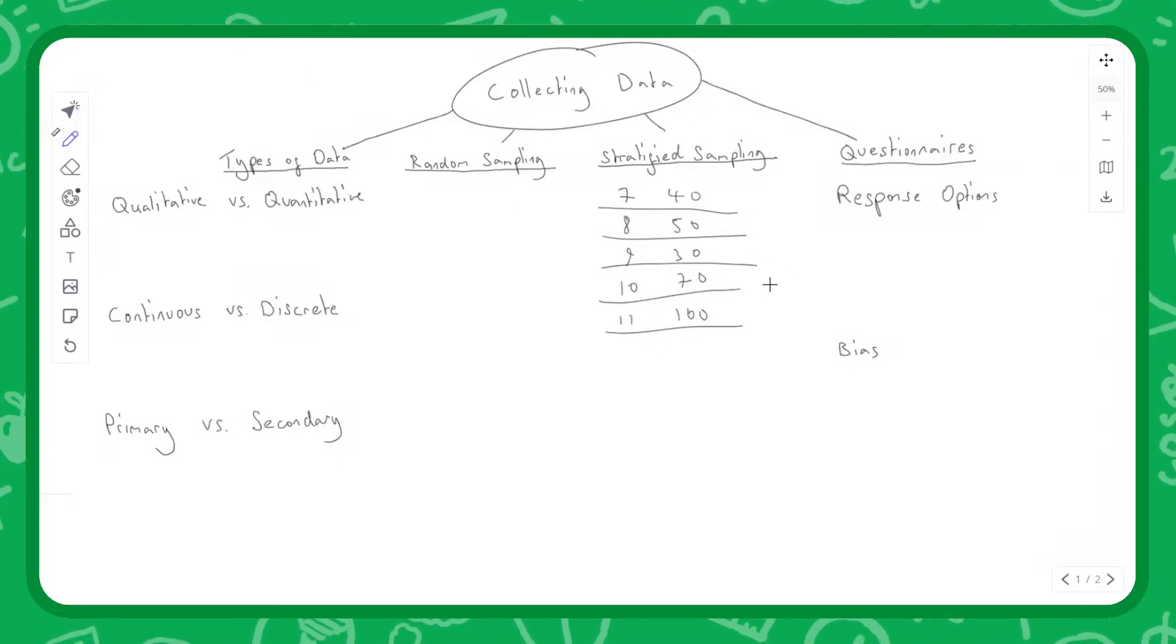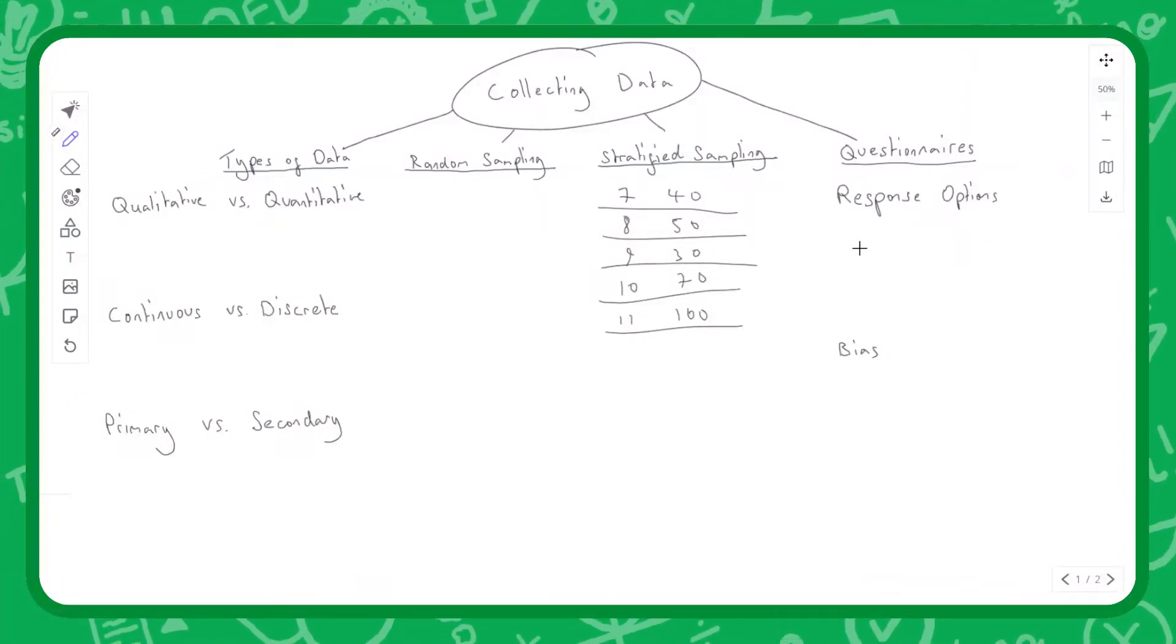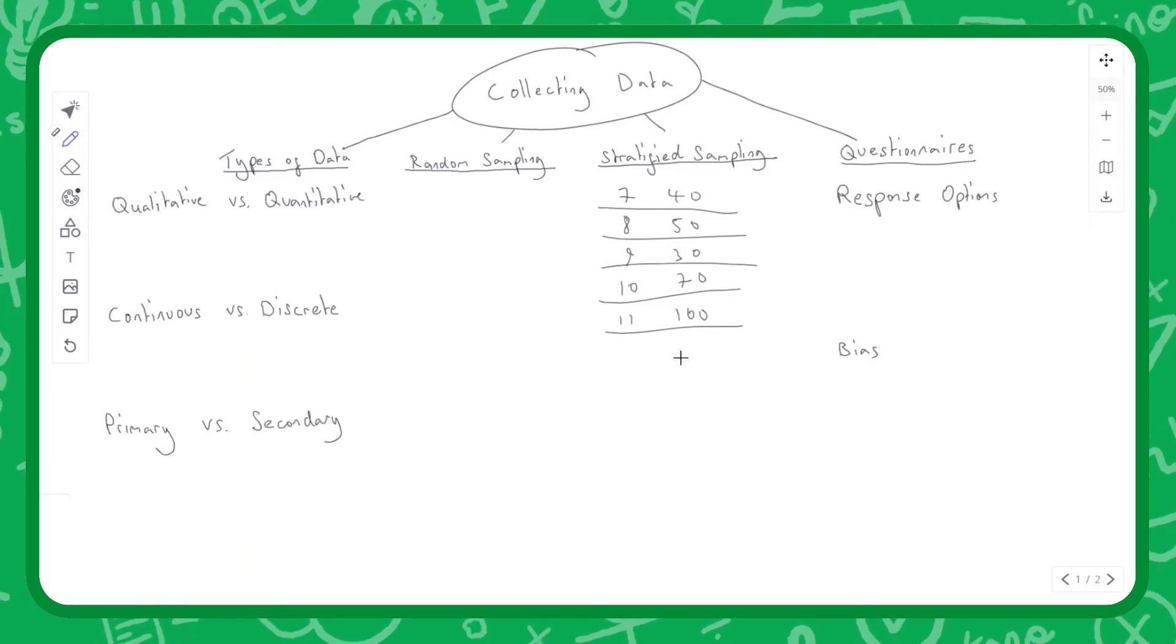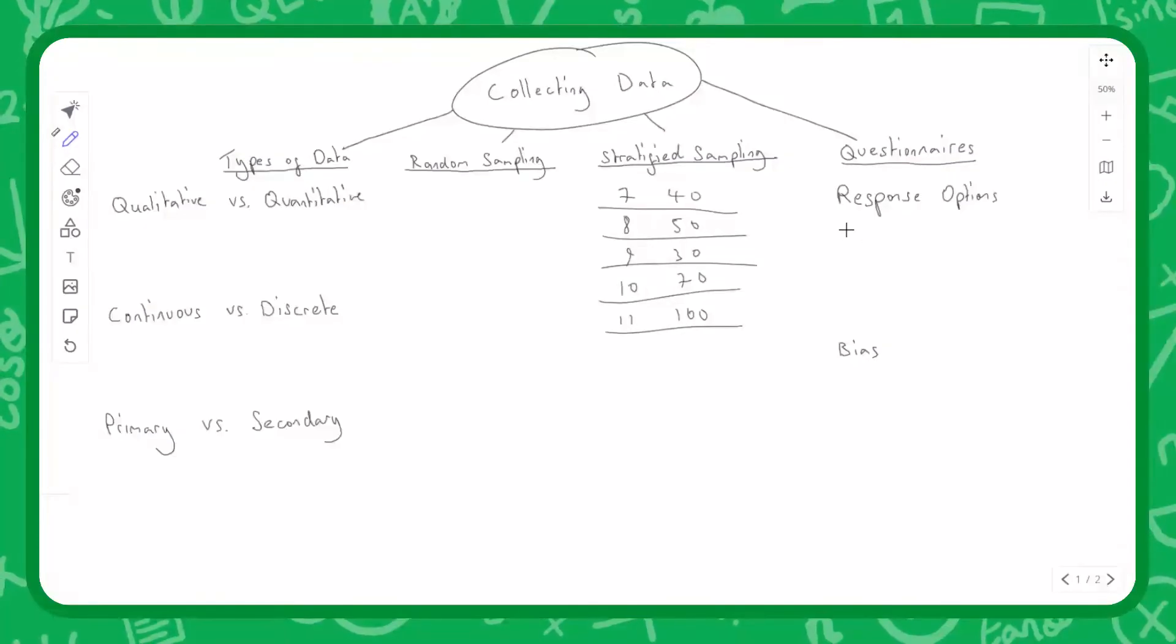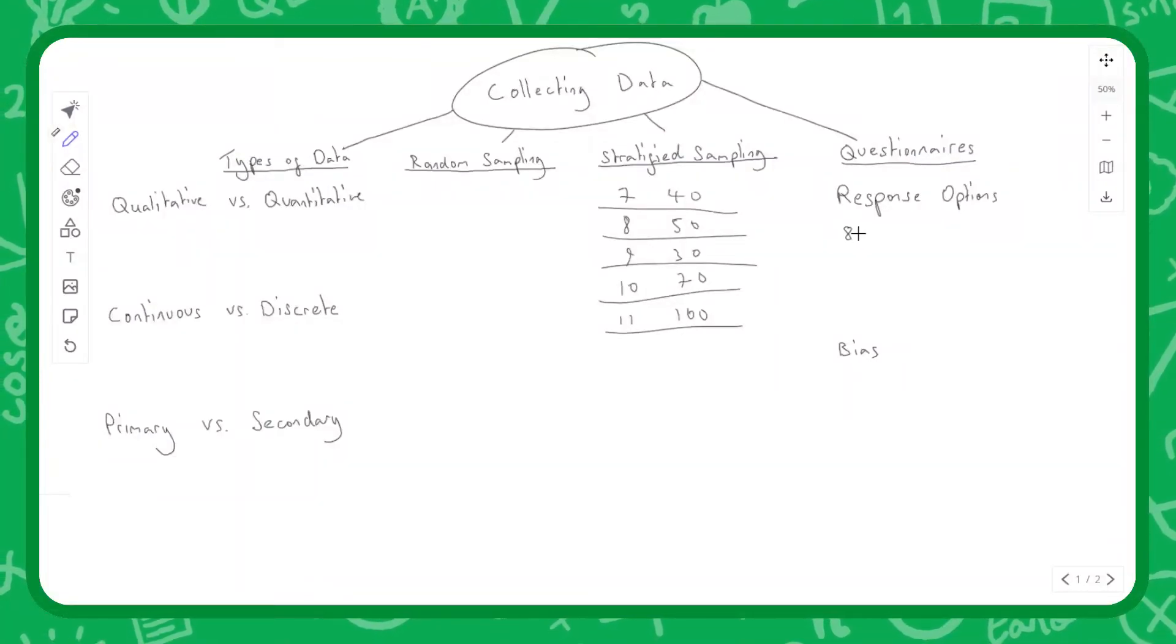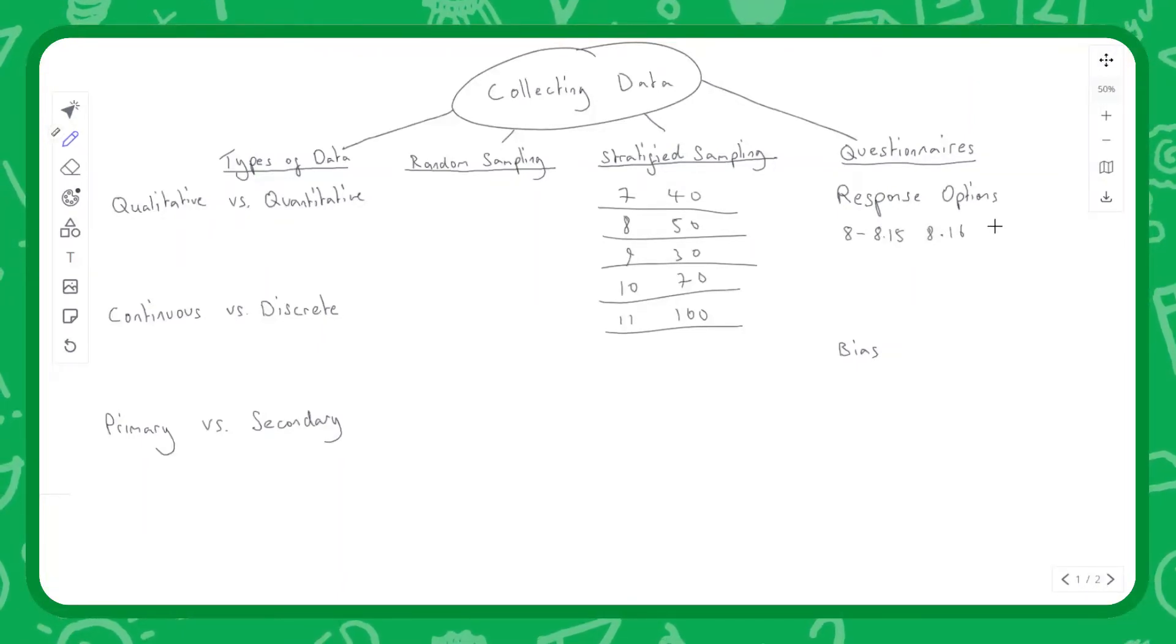Questionnaires. Response options for questionnaires—this comes up quite often. Imagine we want to conduct this survey about when people wake up in the morning. We could say, do you wake up between 8:00 and 8:15, or 8:16 to 8:30, or 8:31 to 8:45? Some people might sleep in to the last minute.